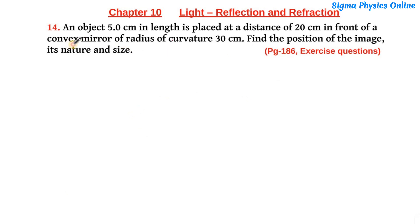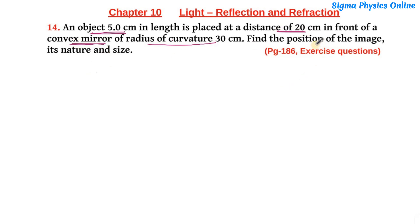In this question we have been given a convex mirror whose radius of curvature is given as 30 cm. There is an object of height 5 cm which is placed at a distance of 20 cm in front of this convex mirror. We have to find out the position where the image will be formed, what will be the nature of that image, and its size.